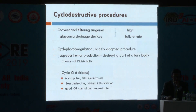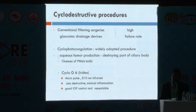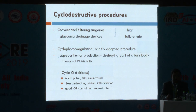Cyclodestructive surgeries can be tried when filtration surgery and glaucoma drainage devices have high failure rates. However, as they destroy part of the ciliary body, chances of phthisis bulbi are greater. Newer lasers like cyclophotocoagulation using Micropulse 810 nm infrared laser are less destructive, can cause minimal inflammation, provide good IOP control, and are repeatable — so they can be used in high-failure-rate cases.